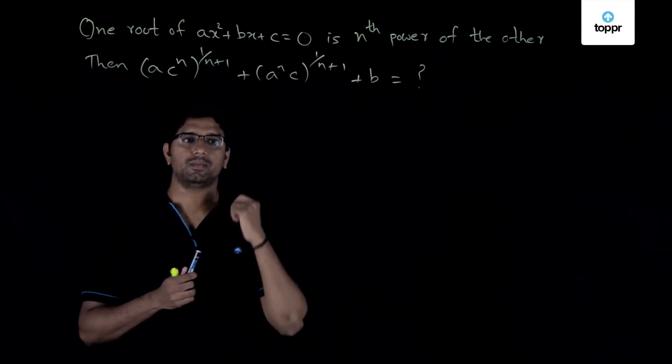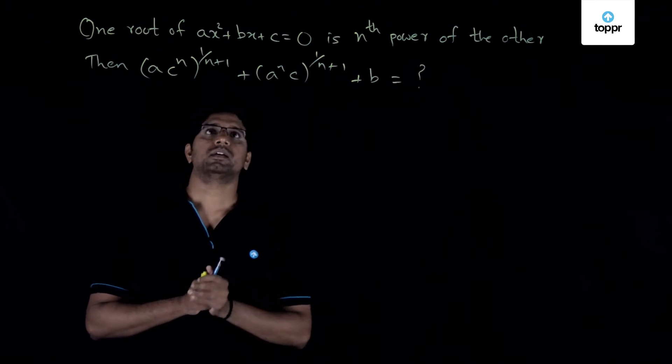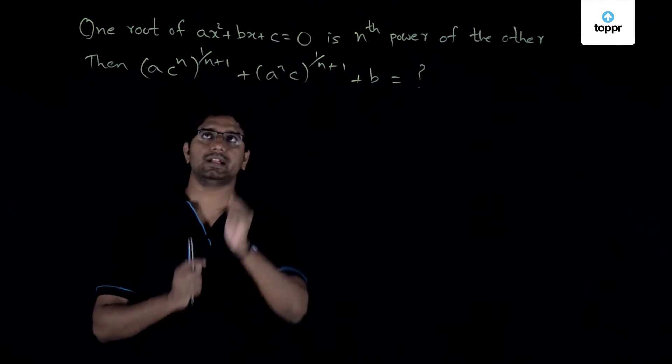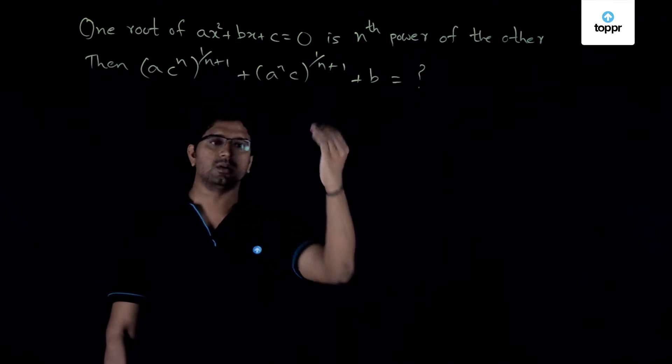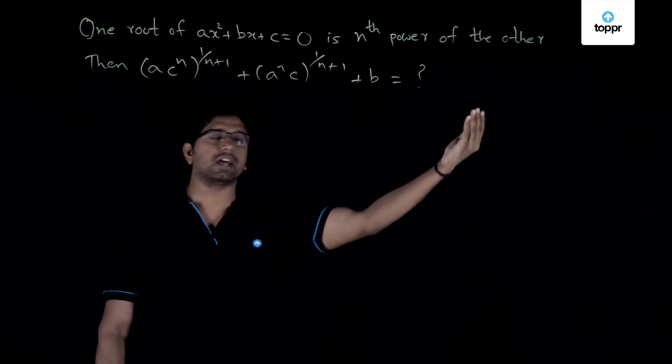Let us now have a look at a problem involving quadratic equations. So it is said that one root of ax square plus bx plus c equal to 0 is the nth power of the other root.